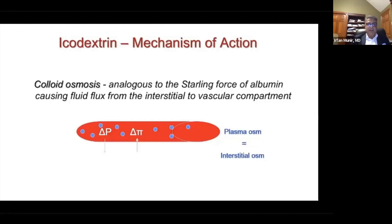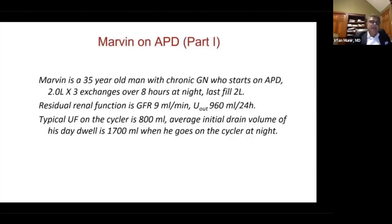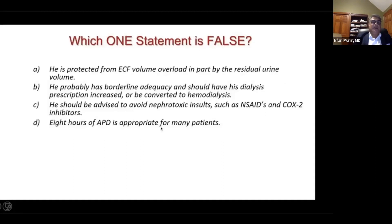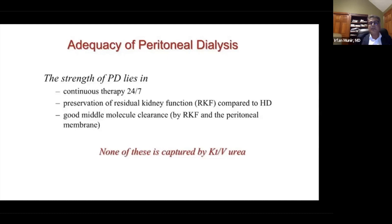In high transporters, we typically have issues with ultrafiltration. The patient starts automated peritoneal dialysis with two liters, three exchanges over eight hours at night, with a last fill of two liters. He is protected from extracellular volume overload in part by residual urine volume. One of the key strengths of peritoneal dialysis is the longer preservation of residual renal function compared to hemodialysis.